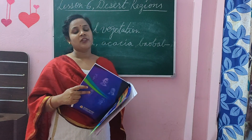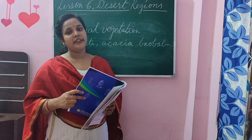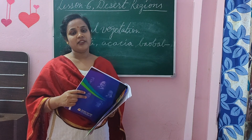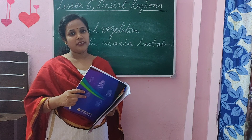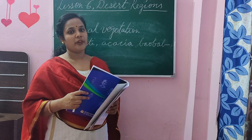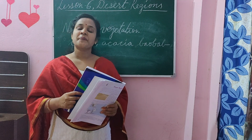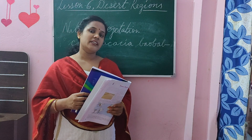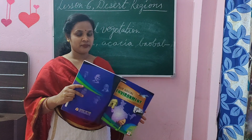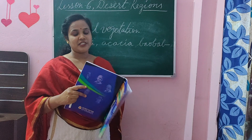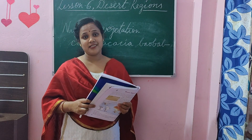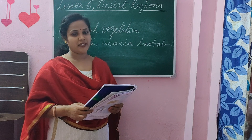Hot deserts are located from 15 to 30 degrees north in the northern hemisphere, away from the equator, and from the equator 15 to 30 degrees south near the Tropic of Capricorn. The deserts include the Sahara Desert, Kalahari Desert, Arabian Desert, and so many others.